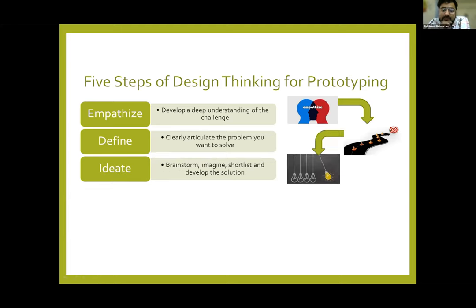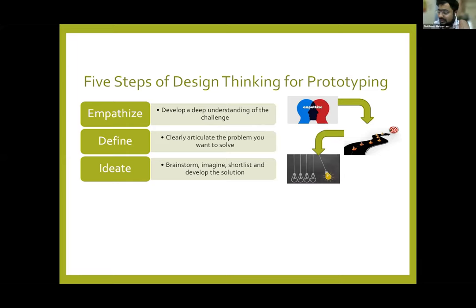The third step is ideate — what to do. This is our statement, our definition; this is what we need to do. How to do it is to ideate. In our practical classes we do brainstorm sessions, imagine, shortlist, and develop solutions. Just brainstorm — generate as many ideas as possible, even some that may not seem possible, because even a small ideation can lead to a very good product. The ideation step involves brainstorming, forming a team, gathering more interviews, taking more and more ideas, and targeting how you can achieve that.